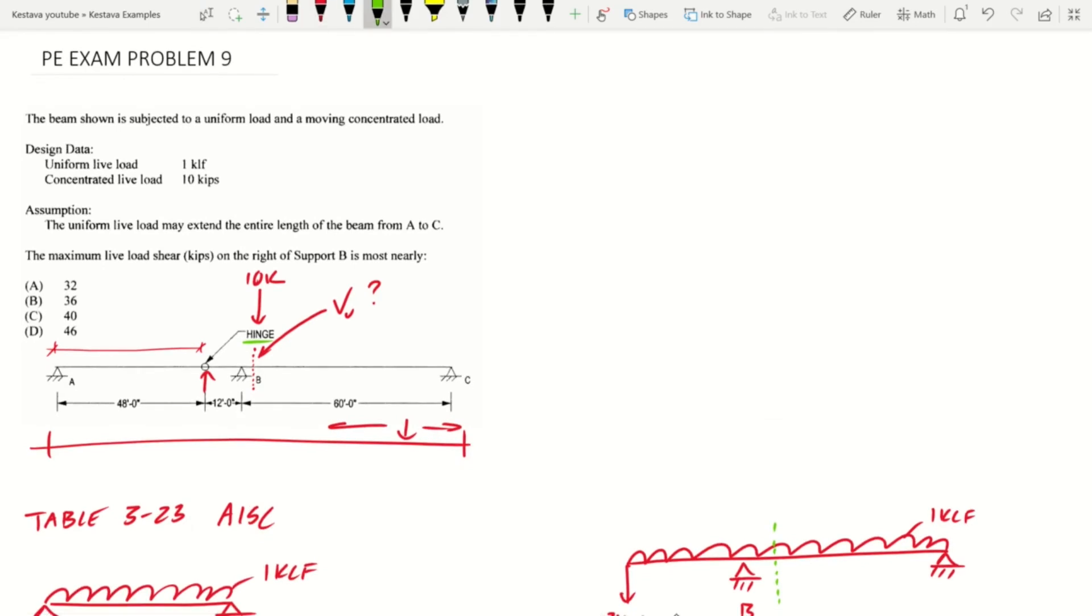And we can see, with our handy green, the answer then is going to be D, 46 kips.